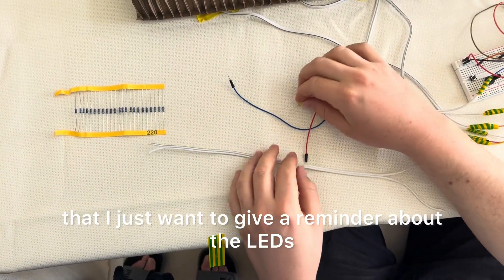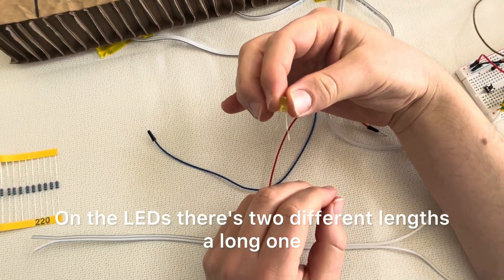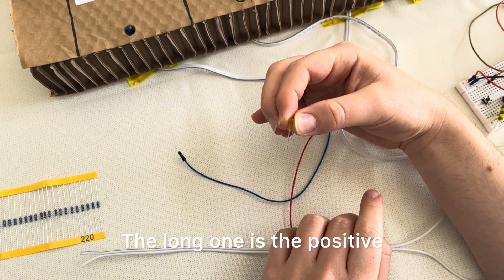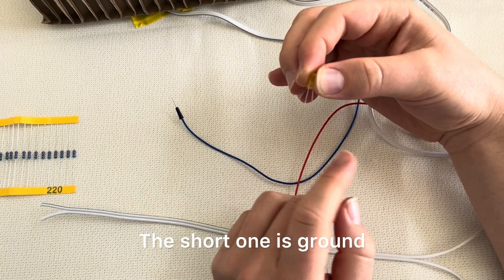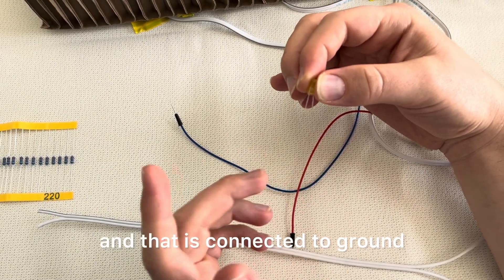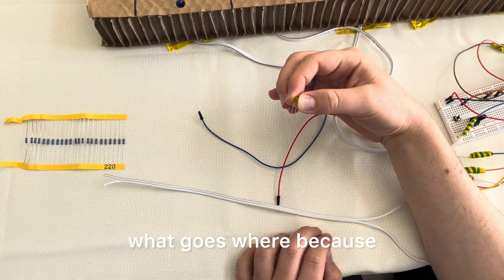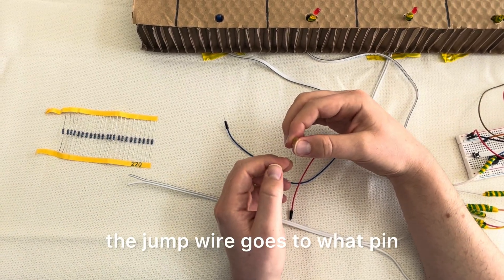Let me show you how to connect it. But before I do that, I just want to give a reminder about the LEDs. On the LEDs, there's two different legs, a long one and a shorter one. The long one is the positive, and that is usually connected to the pin. The short one is ground, the negative leg, and that is connected to ground. So when you connect the LED, just remember what goes where.